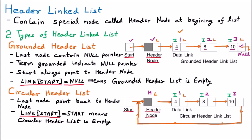Link[start] means we are talking about the link part of the node where start is pointing — that is the header node's link part. If this link part equals start, meaning it is pointing back to the header node itself, that means there is no element present and the circular list is empty. But here this is not the case because we have multiple elements: four, eight, and ten.